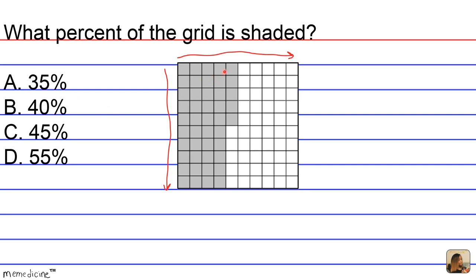But we notice that we have half of a shaded line, or half of a column, so we're actually at 45%. 40 here, 5 there. And the correct answer choice is answer choice C.